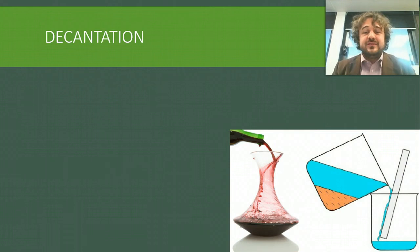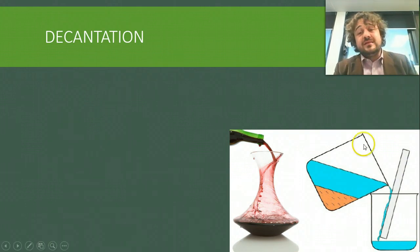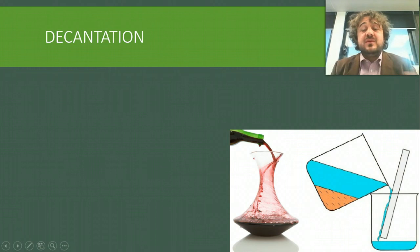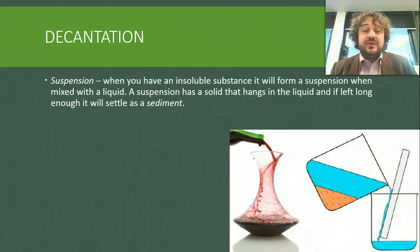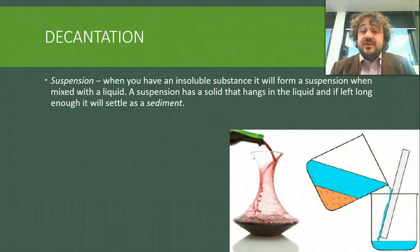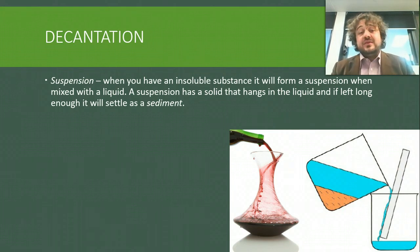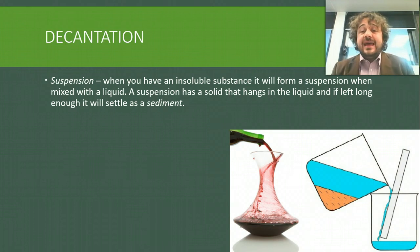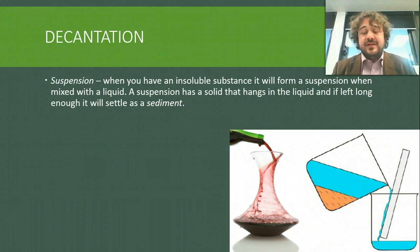So decantation — we'll start here. This is where you would use it. You usually have a liquid with something called a sediment in there. That type of liquid is called a suspension. A suspension is when you've got an insoluble substance — so it won't dissolve — mixed into a liquid. It's a solid that hangs in the liquid and, if left long enough, will settle to the bottom as a sediment.